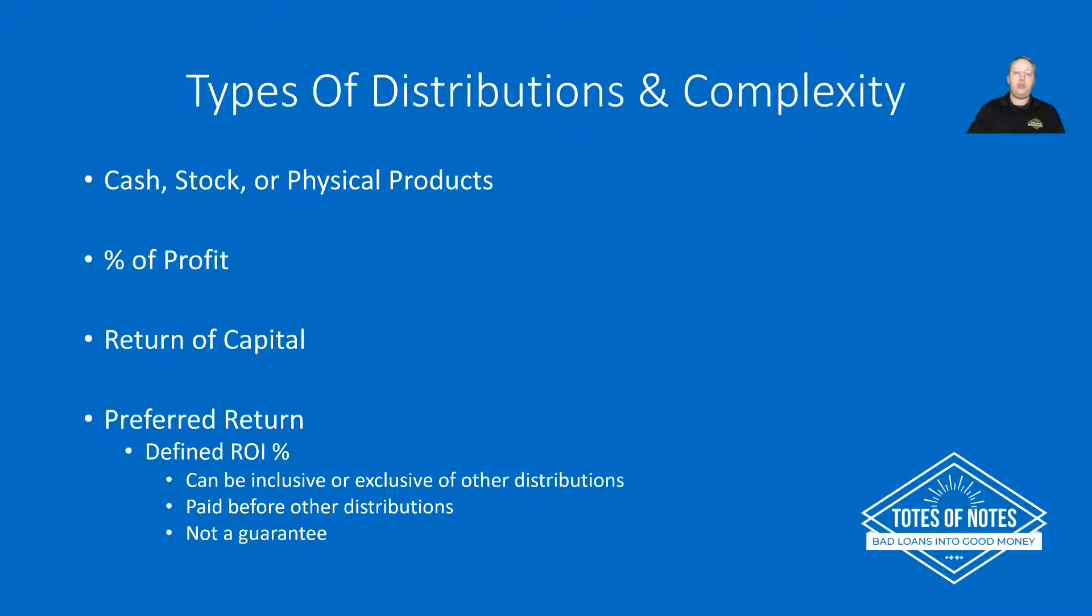Another really popular type of distribution would be a preferred return. And this is generally going to be in the form of an ROI percentage, a return on investment percentage that you'll get from the profits before any other type of profit distribution is worked out. So let's say you're running a business and you have 10 investors, and you're offering your investors 10% preferred return first. That means they're getting 10% on their investment money from the profits before anything else is calculated.